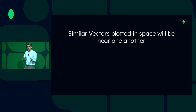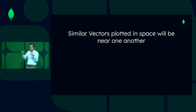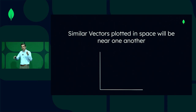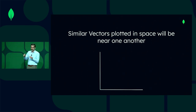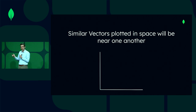Once you've taken data and transformed it into a vector, there are some really interesting properties about these vectors. A key one is that similar vectors plotted in space will be near one another in this high-dimensional space. To take a simple example using a two-dimensional graph — and it's important to realize that while two-dimensional graphs are great for showing this concept, all the vectors we're talking about are really high-dimensional, we're talking about thousands of dimensions, which are really impossible to visualize.